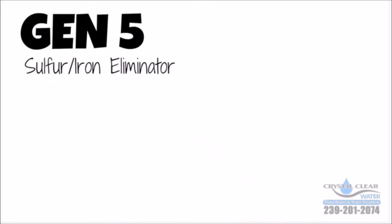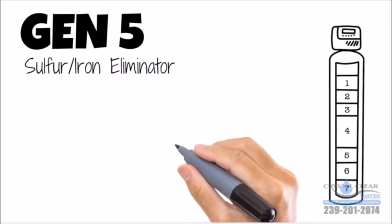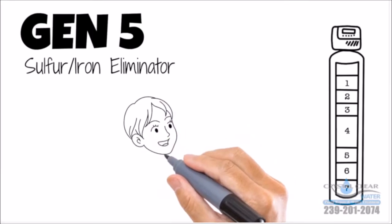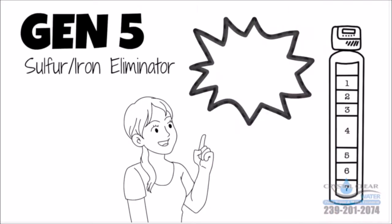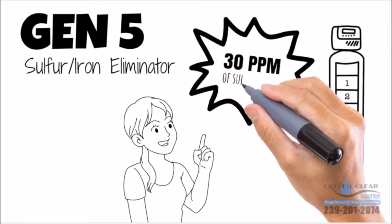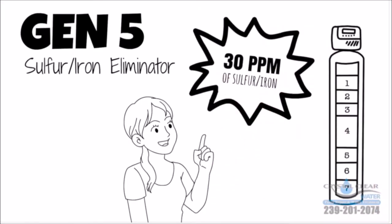Gen 5 Sulfur Iron Eliminator. This innovative and safe seven-stage filter will effectively remove that sulfur smell from your water. And unlike competitors, the Gen 5 can remove 30 parts per million of sulfur and iron in your water.